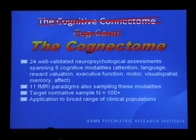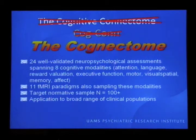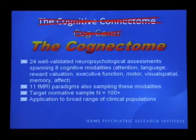The Cognitive Connectome will consist of 24 well-validated neuropsychological assessments spanning eight cognitive modalities: attention, language, reward valuation, executive function and working memory, motor ability, visuospatial ability, memory, and affect. It will also include 11 canonical fMRI paradigms that have been replicated time and time again within our field, but in small, poorly characterized samples of 20 to 30 people at most — which is largely a historical limitation in our field.